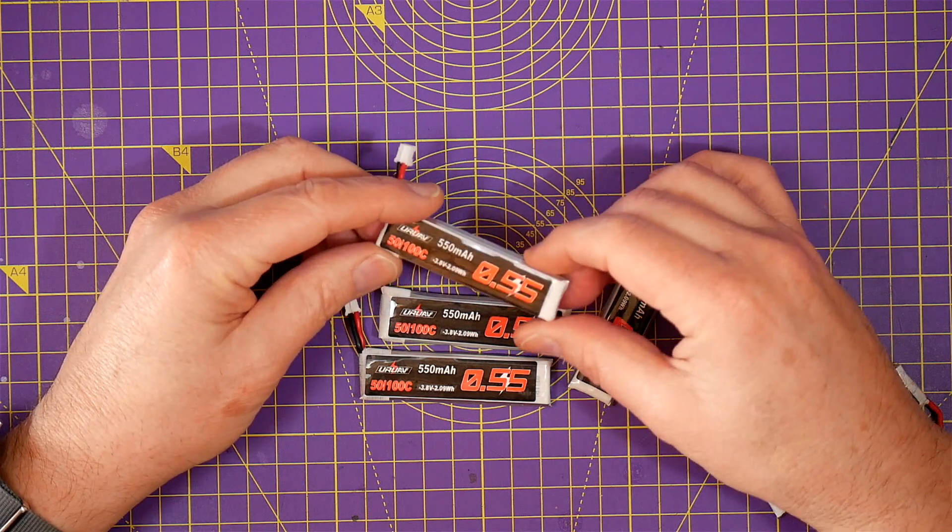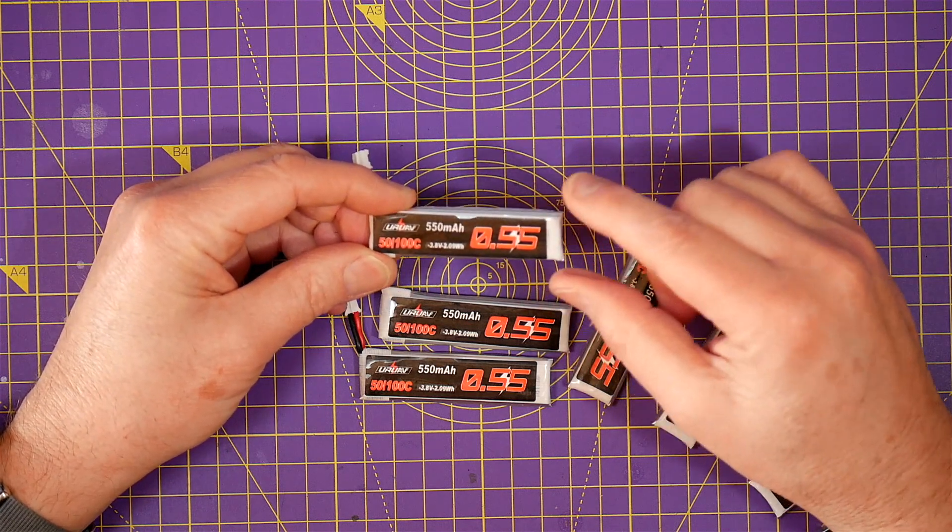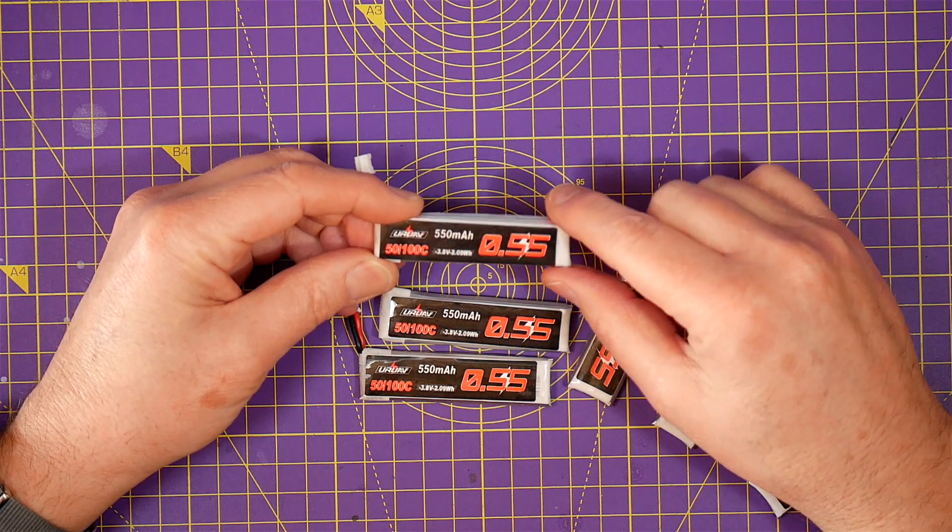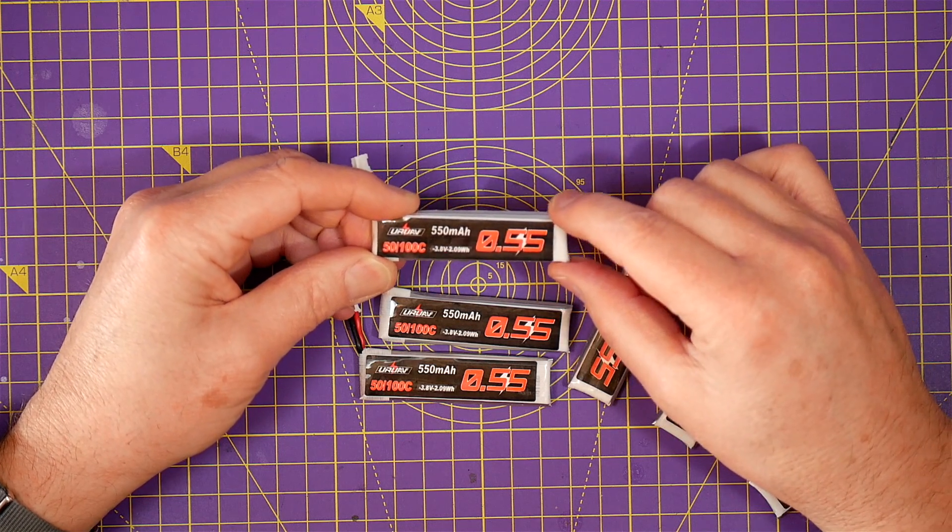So if you're in the market for some 1S HV LiPos for your Tiny Whoop, I'd say these are a pretty good buy. And do keep an eye out on Banggood offers and discounts on these, they seem to change every week.